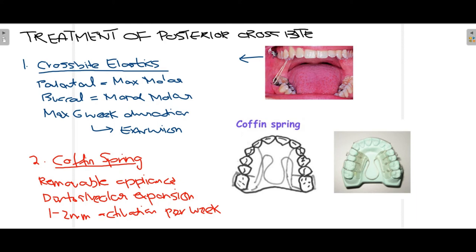The second appliance for posterior crossbite is the coffin spring — a removable appliance that somewhat resembles a coffin shape. The coffin spring is used for dental-alveolar expansion, meaning the teeth and palate expand transversely. Mainly the teeth expand in the buccal direction. The coffin spring is manually activated — it is taken out and moved in the buccal direction by one to two mm per week, applying force to correct the posterior crossbite.